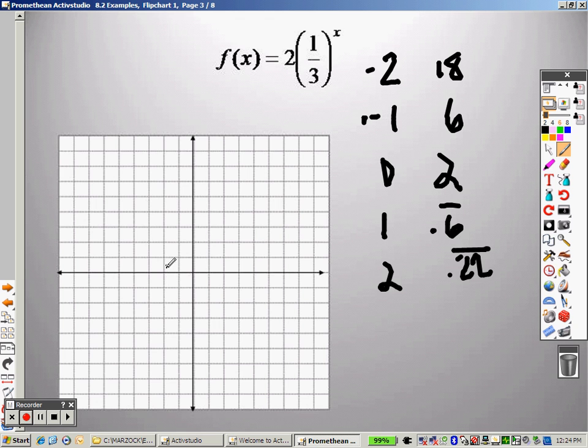So negative 2, 18 somewhere way up here. Negative 1, 6 is here. 0, 2 is right there. 1 and 0.6, and 2, and we get even closer. Notice how when you connect them, it just goes down, and it looks like the graph.